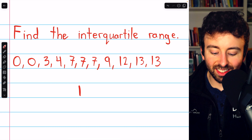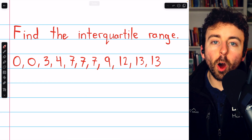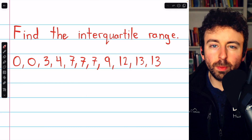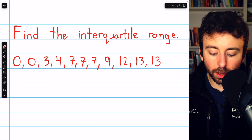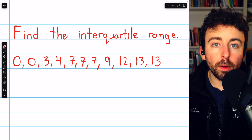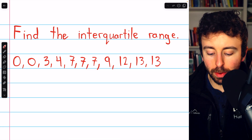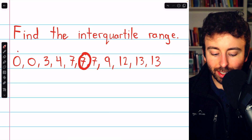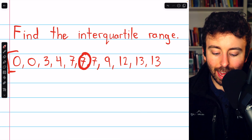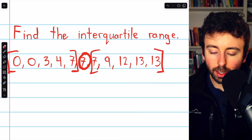This first example has 11 data points. That's an odd set, which means there will be a number right in the middle. We have to start by finding that middle number — the median — which is right there, and we basically split the data into a lower half and an upper half.